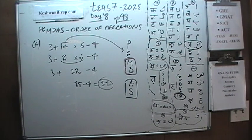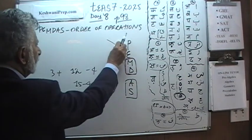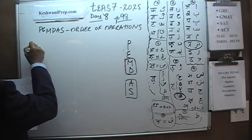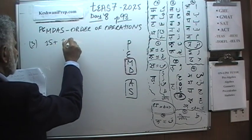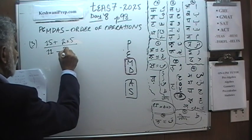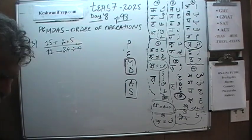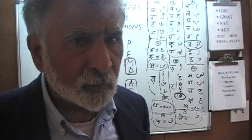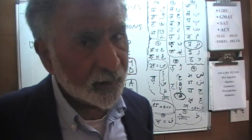That was number 2. Let's look at number 3. Number 3 says: 15 plus 2 times root 5, over 11 minus 24 divided by 4. Before we do this problem, I am going to rewrite it to show you that the exact same problem could have been presented in a very different form.